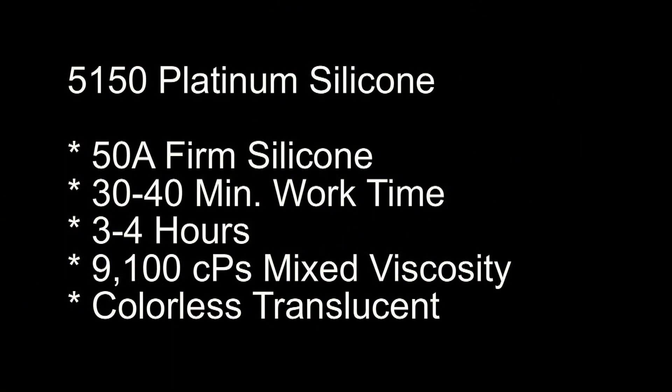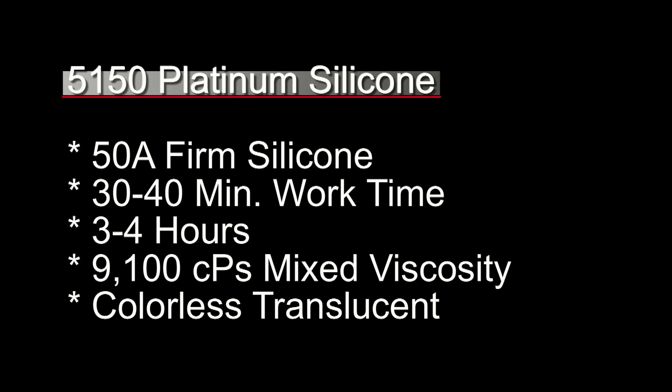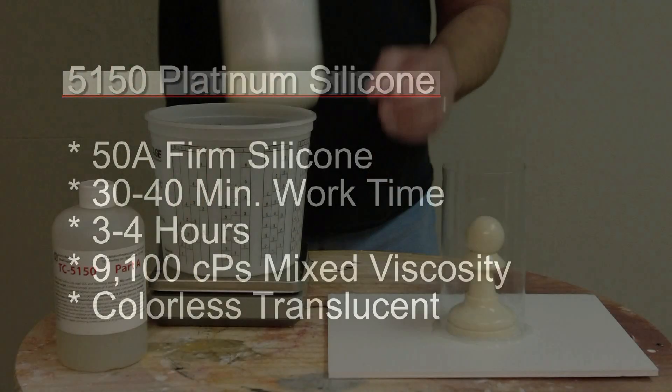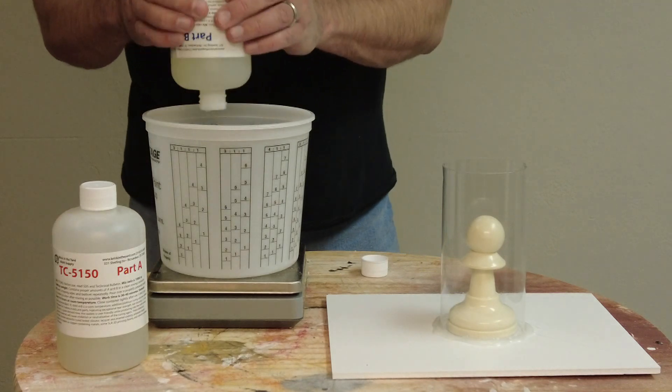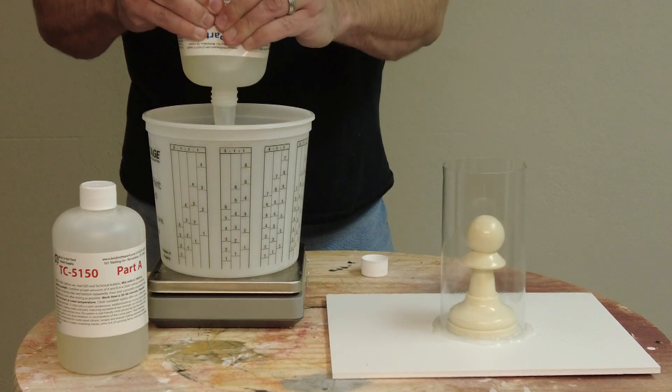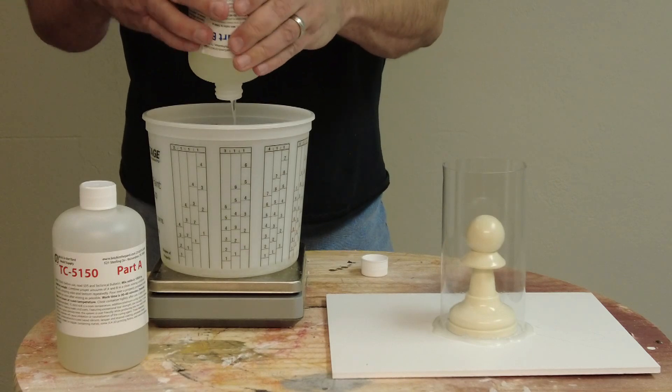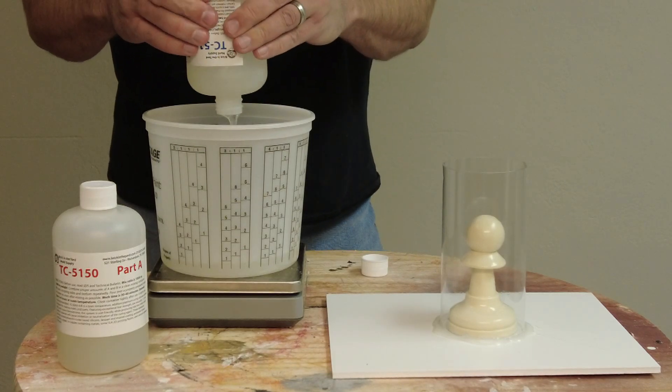Now let's go over the properties of the 5150 platinum silicone. It's platinum, so we want to be careful about any kind of cure inhibition. This cures to a very firm 50 Shore A silicone, has a 30 to 40 minute working time and a 3 to 4 hour demold at room temperature. For a silicone, especially one this hard, it has a relatively low mixed viscosity of 9,100 centipoise. It's colorless translucent, which means we can do a lot more with this than just make molds. This is also a good silicone for casting silicone parts. We have a lot of our customers that use this to prototype silicone parts, and they can pigment this to whatever color they want.